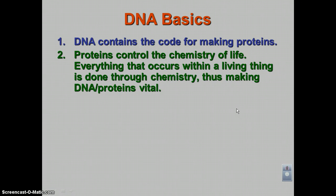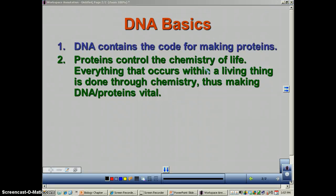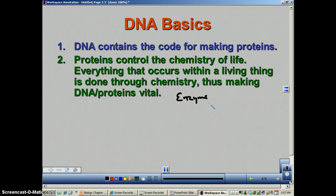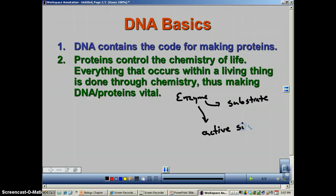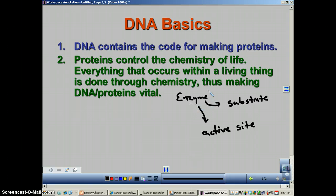Remember that proteins control all of the chemistry of life, and everything that occurs within a living thing is done through chemistry. Remember the most important function of a protein is an enzyme. Enzymes speed up chemical reactions by lowering the activation energy. When you have an enzyme, you should think of things like a substrate — this is the item that an enzyme works upon — and also the active site, which is the place on the enzyme where the substrate will fit.